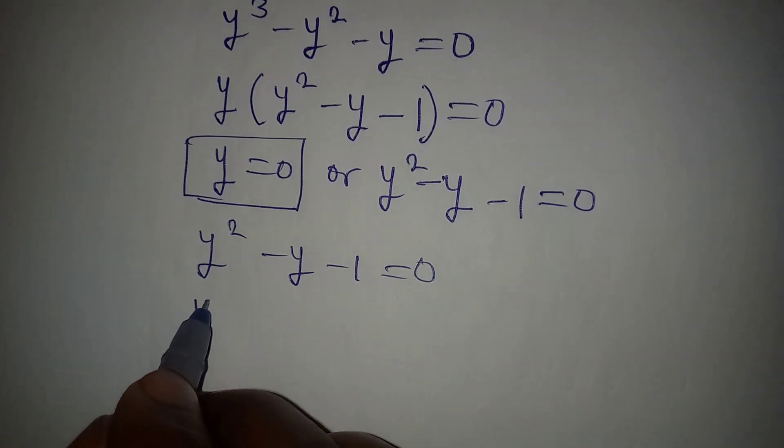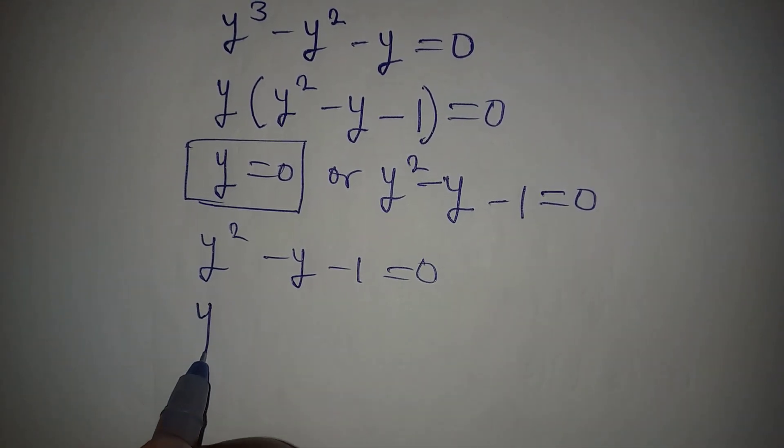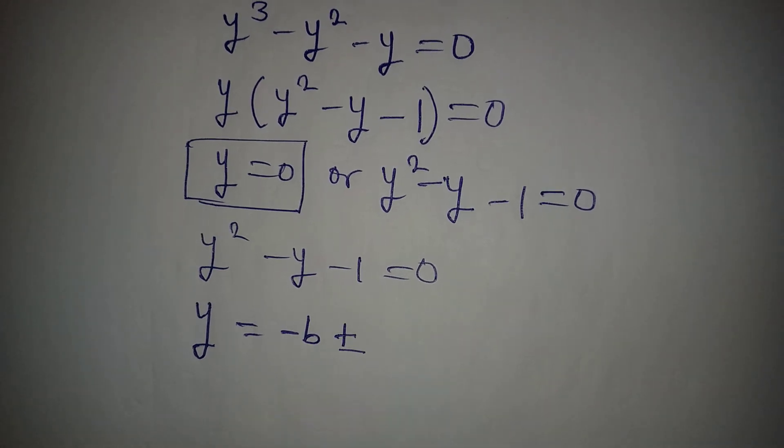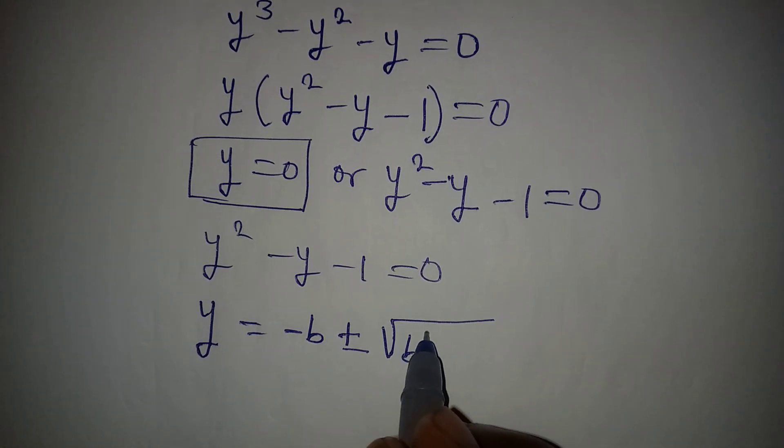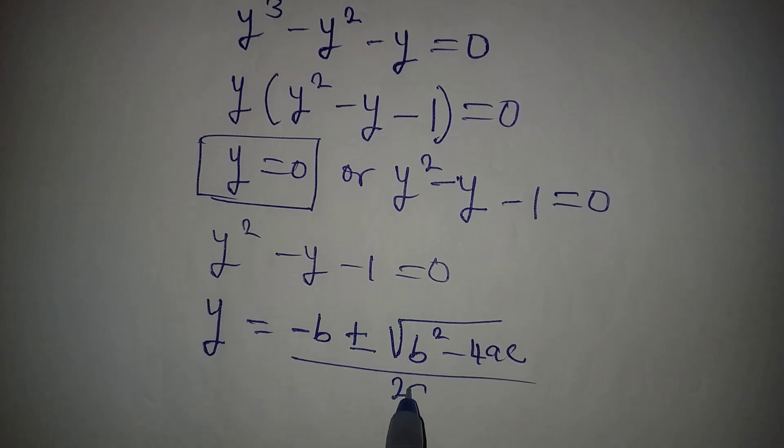From here we can apply the formula method where we have y equal to minus b plus or minus the square root of b squared minus 4ac, all over 2a.